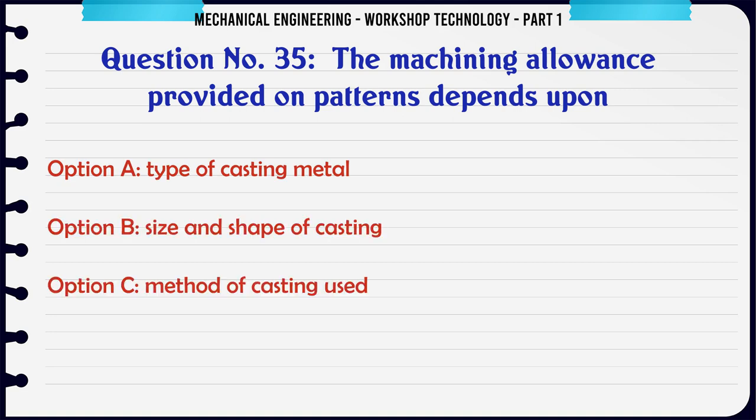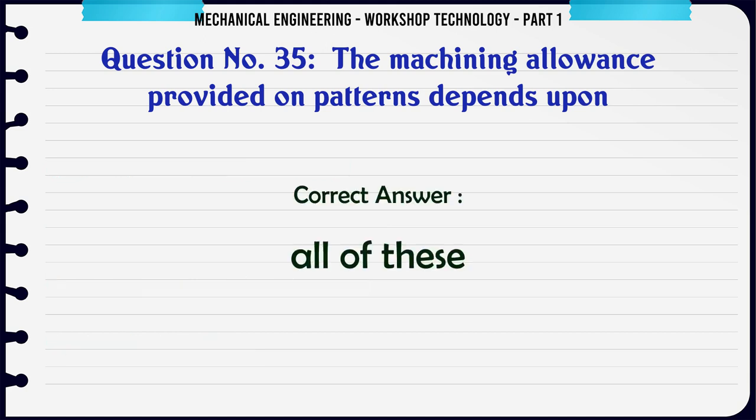The machining allowance provided on patterns depends upon: A. Type of casting metal. B. Size and shape of casting. C. Method of casting used. D. All of these. The correct answer is: All of these.